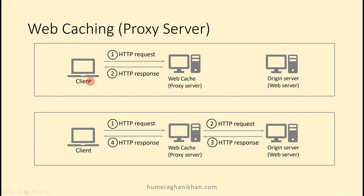Assume a client requests an object on behalf of a web server — the proxy server will send a response. The client creates an HTTP request message and sends it through a TCP connection. If the requested object is available with the web cache, it creates an HTTP response message and sends it to the client through the TCP connection.